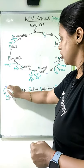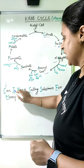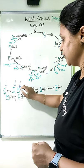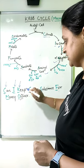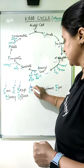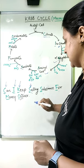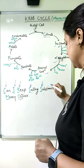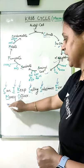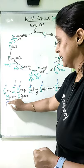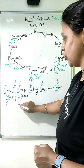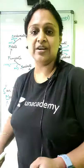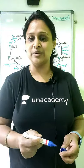C is for citrate, I is for isocitrate, K is for alpha-ketoglutarate, S is for succinyl coenzyme A, S is for succinate, F is for fumarate, M is for malate, and O is for oxaloacetate. So this is how you can remember the Krebs cycle.